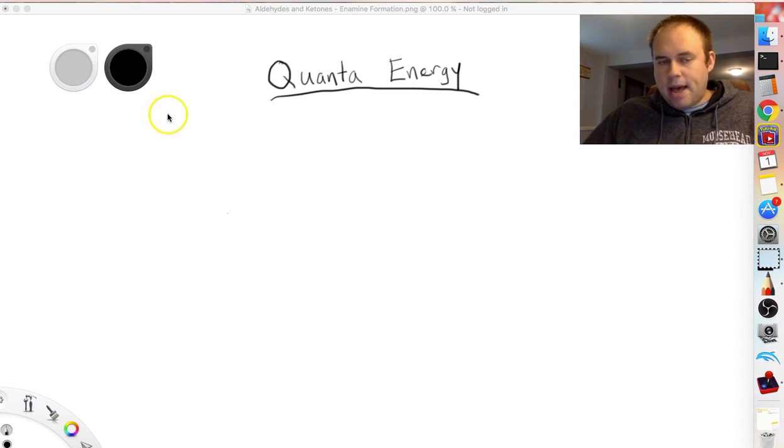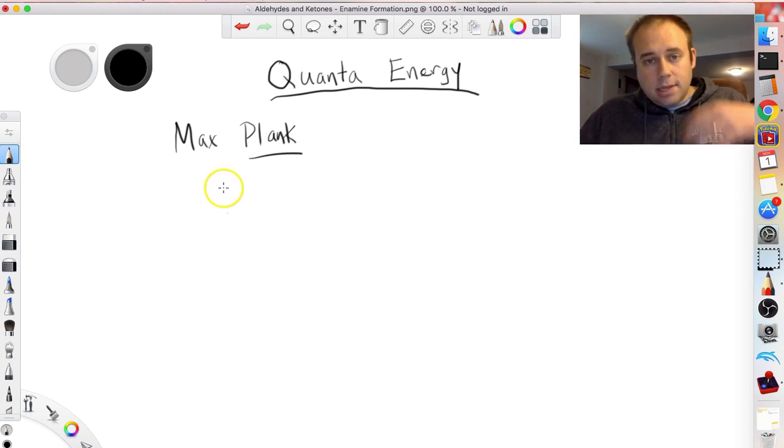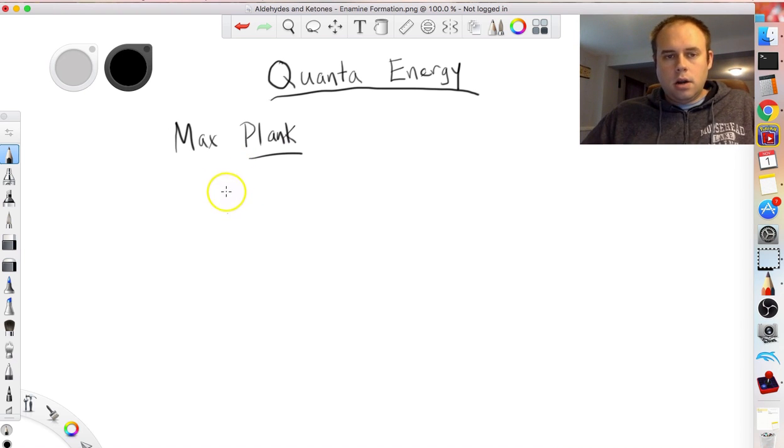So this really came about by an individual by the name of Max Planck, and many of you may have heard at least of the last name because we use Planck's constant when we are looking to calculate quantized energy. Max Planck is really the one that suggested or found the solution to the idea that these quantized energy packets existed instead of a continuous amount of energy.